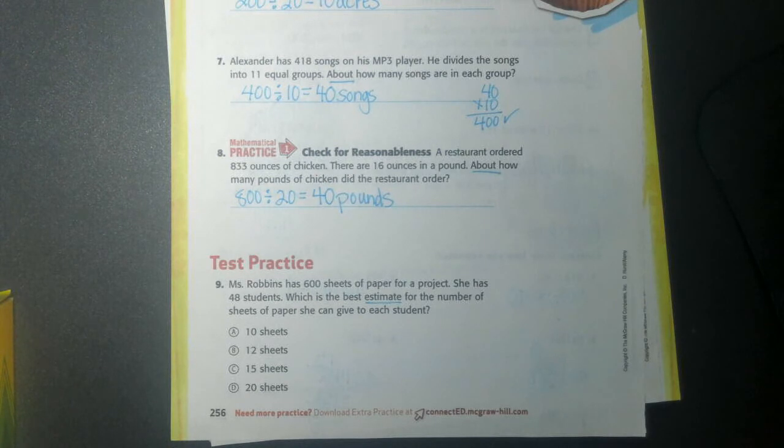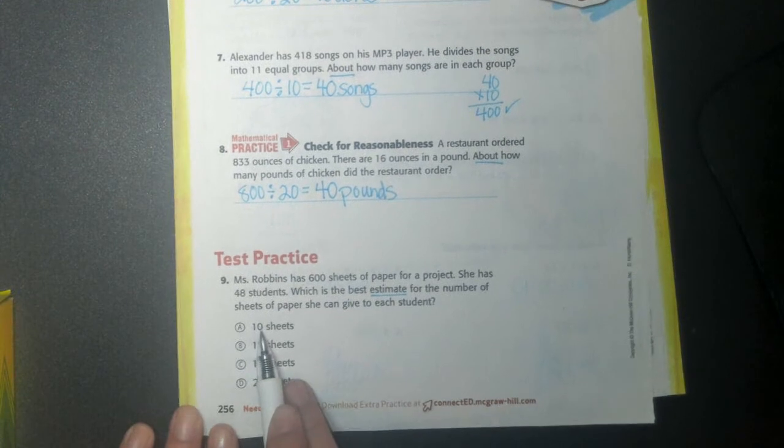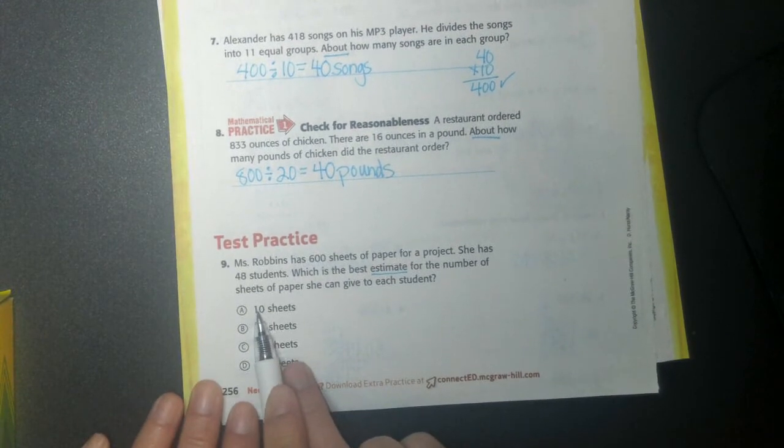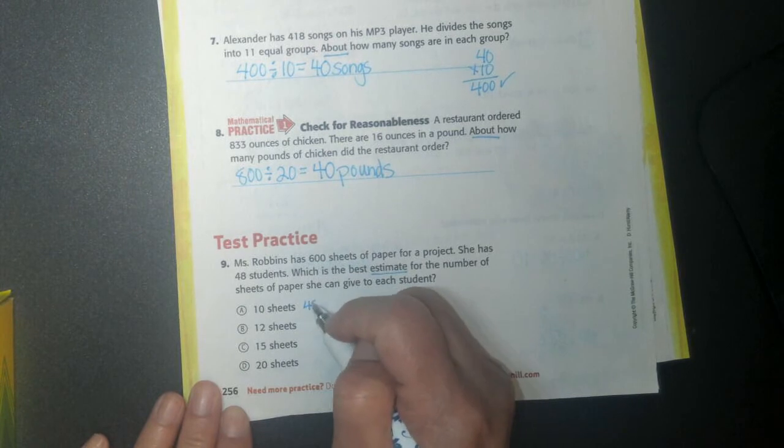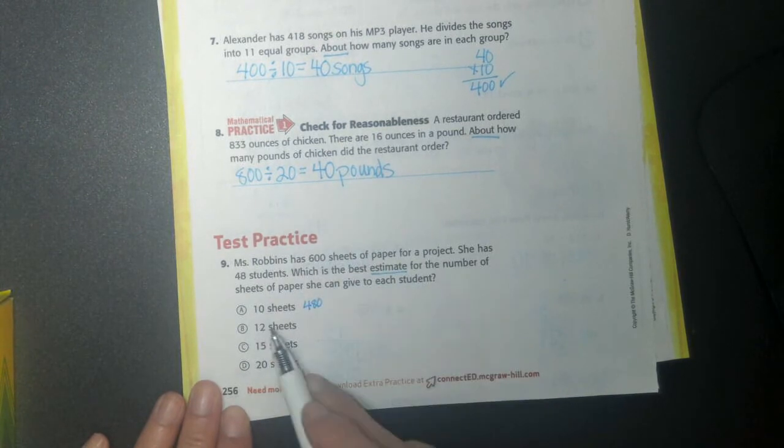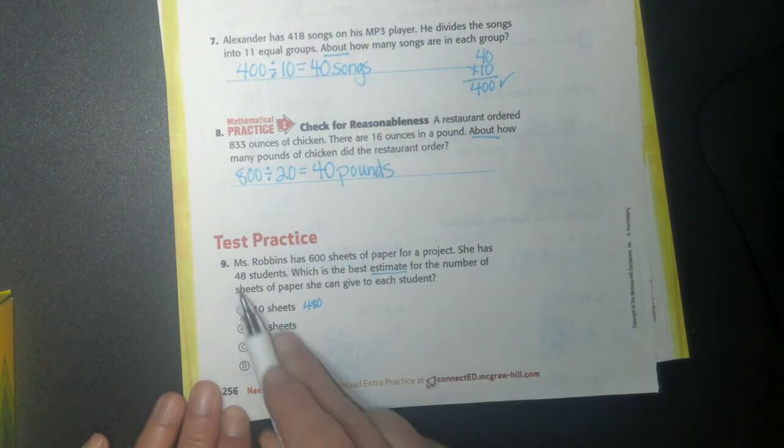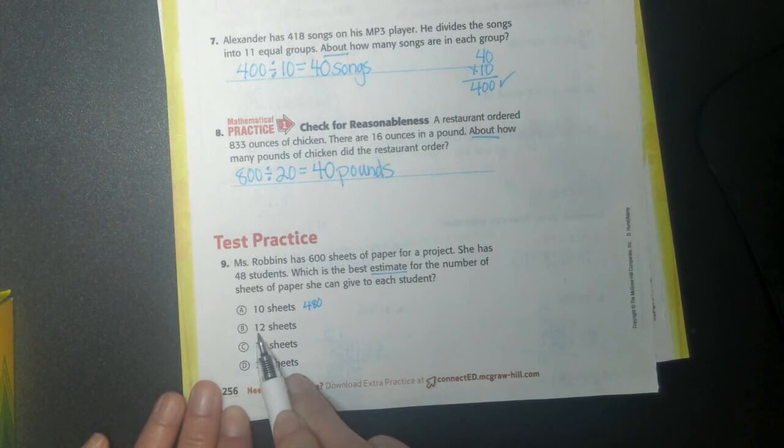So my last problem. It says Mrs. Robbins has 600 sheets of paper for a project. She has 48 students. Which is the best estimate for a number of sheets of paper she can give to each student? So we're going to estimate. If she had 10 to each student times 48 students, that would be 480 sheets of paper. Right?